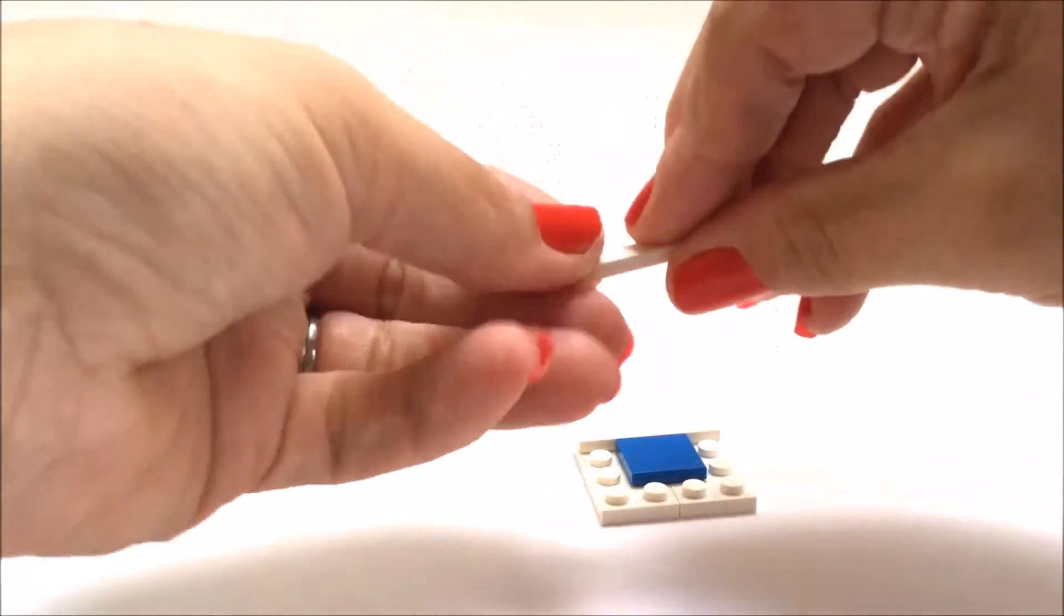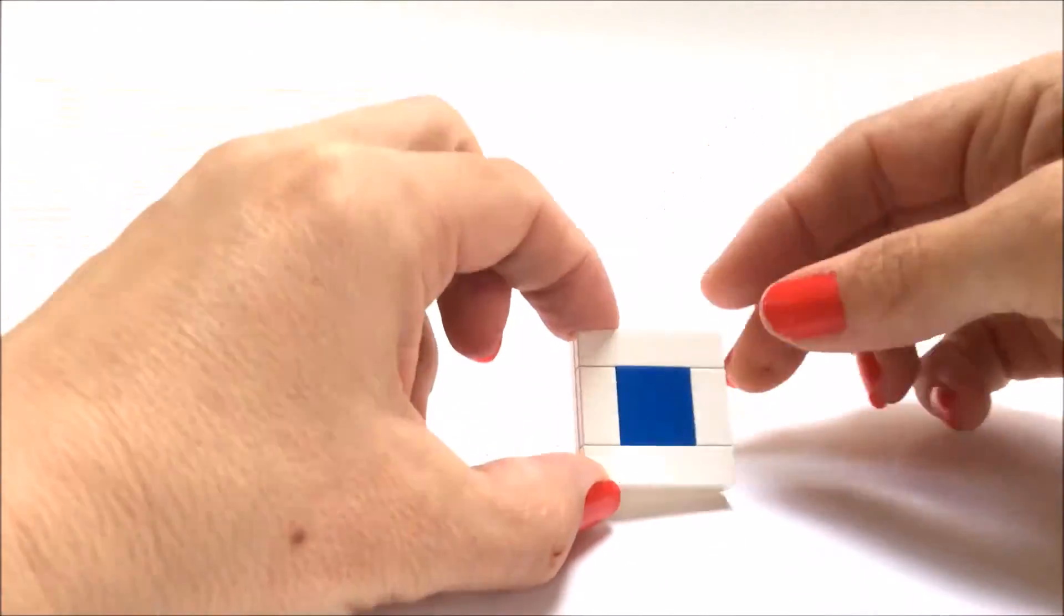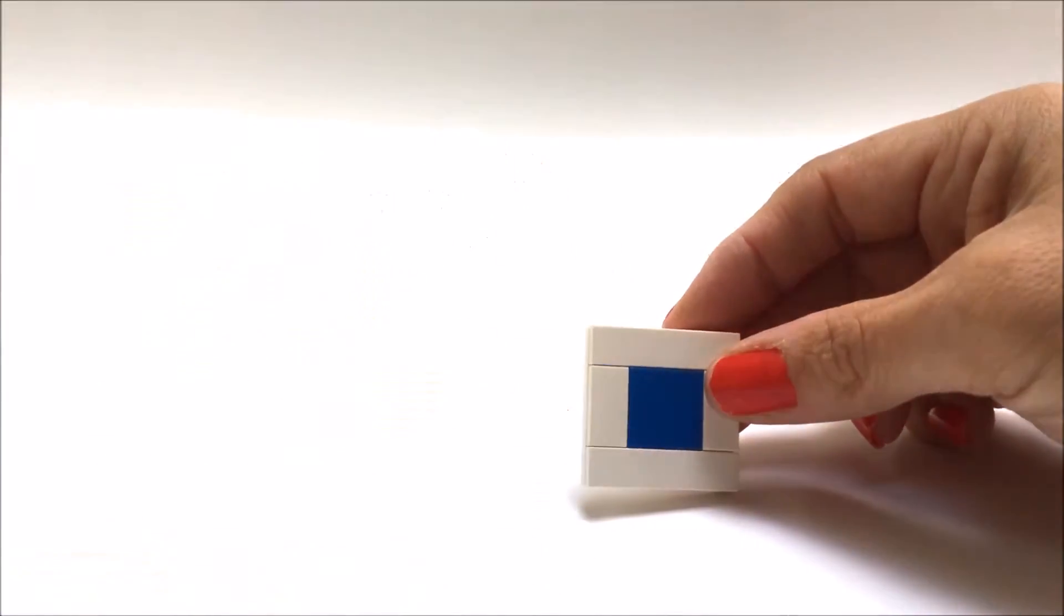Using two 2x4s we're going to place a blue 2x3 tile in the centre, two 1x4 tiles in white to create the mirror's frame and two 2x1s so our mirror can fit nicely onto the wall like so.